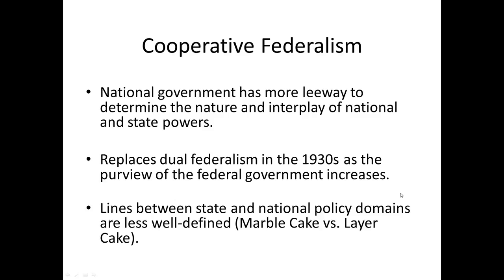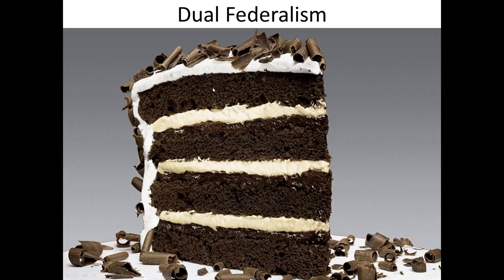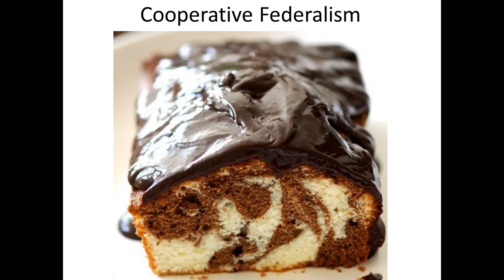The book tries to distinguish dual versus cooperative federalism using a cake metaphor — a layer cake versus a marble cake. A layer cake corresponds to dual federalism, where the layers are distinct from one another — the chocolate layer is a federal domain, the icing is state-level domain. Moving forward, cooperative federalism is more like a marble cake where the different flavors are intermingled. You can't slice off a particular part and only have one flavor — all policy areas have both state and federal influence under cooperative federalism.